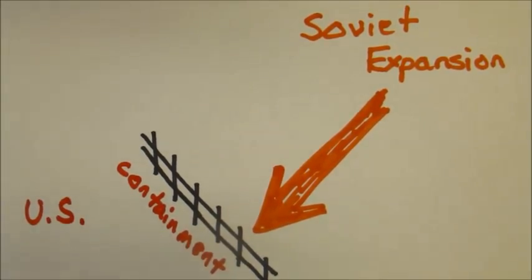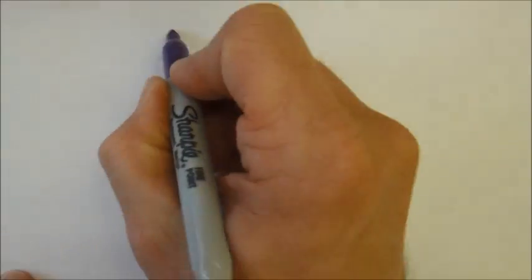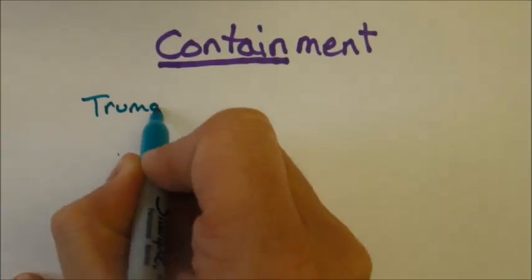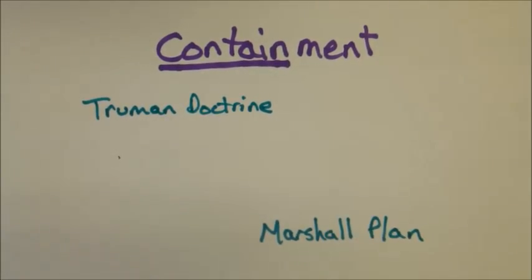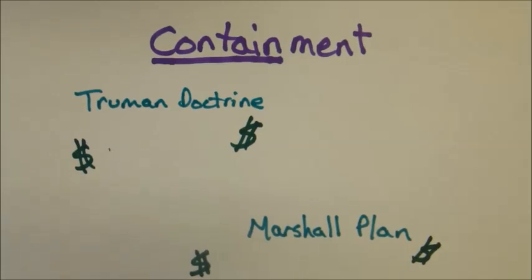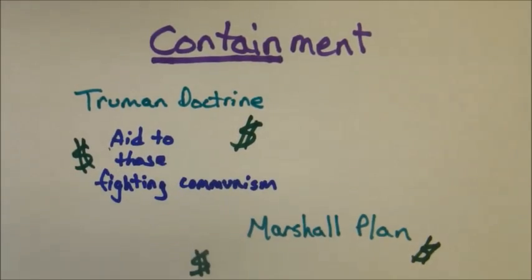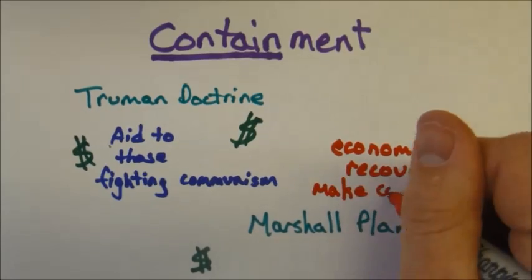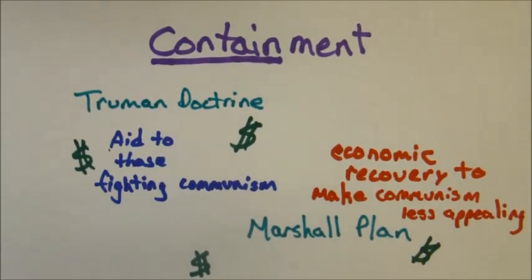But how? Initially, two plans were developed. One was called the Truman Doctrine and the other the Marshall Plan. The Truman Doctrine provided aid to those fighting communism, like in Greece, and the Marshall Plan sought to provide economic recovery to make communism less appealing.